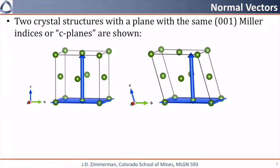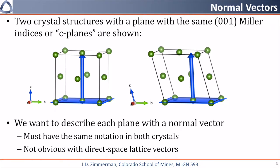Here I have shown two crystal structures, where we've highlighted the 001 plane in both systems. One convenient way to describe a plane is using the vector perpendicular or normal to the plane. Furthermore, it must have the same vector components in both systems.